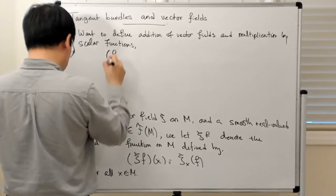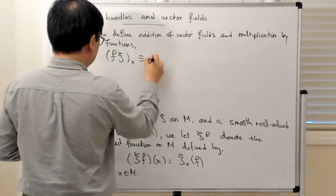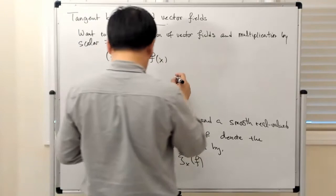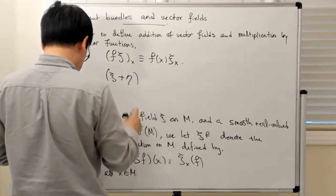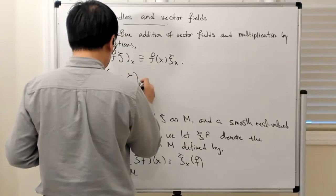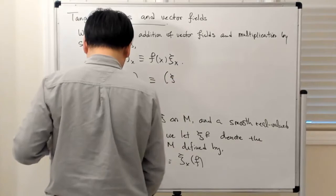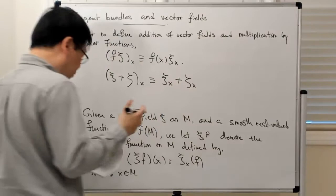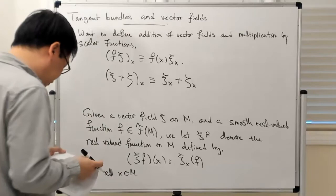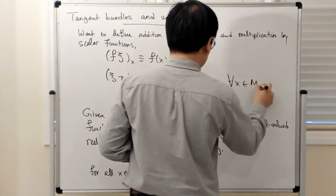If you have F times C at the point X, that's defined point-wise: you have F at X multiplied by C at X. And if you want to add two vector fields at a point, you just define them by adding point-wise — at the point-wise level you have the tangent space, which we already gave a linear space structure, and you do this for all X on the manifold.